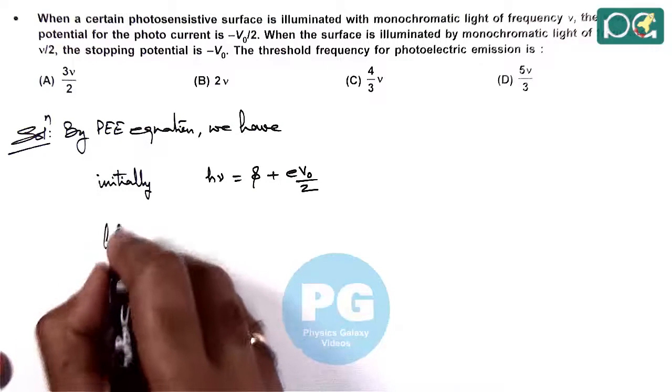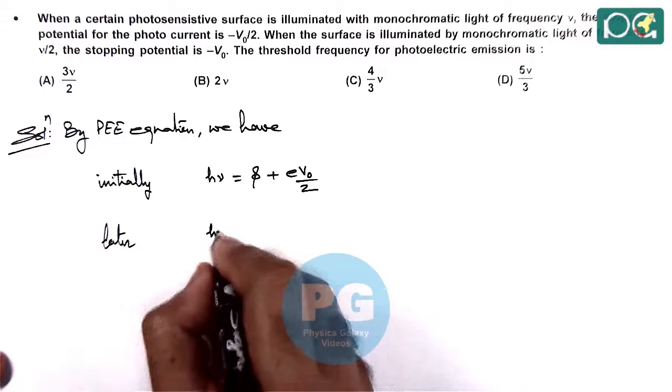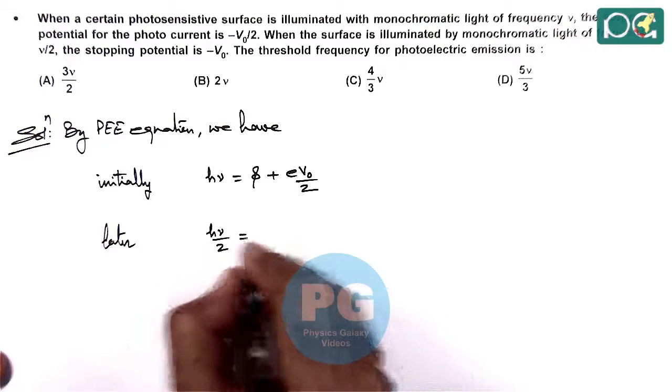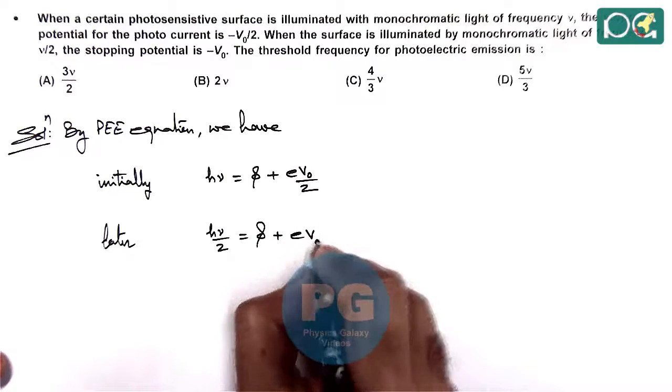Later, when the frequency reduces to half, it can be written as H-nu by 2 equals phi plus E-V-not.